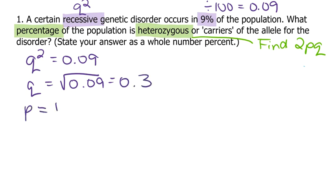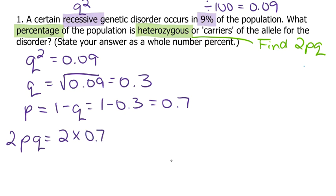P is 1 minus q. So that's 1 minus 0.3, which is 0.7. And then 2pq is 2 times p, which is 0.7, times our q, which is 0.3, to get 0.42.